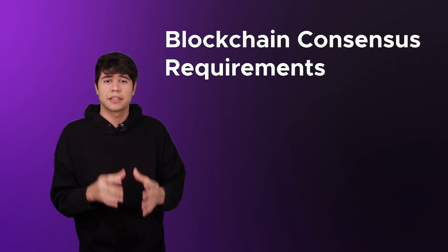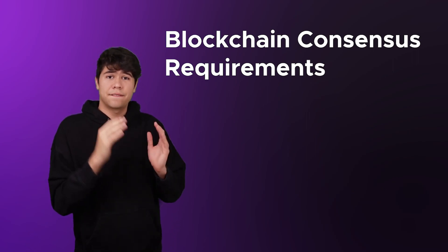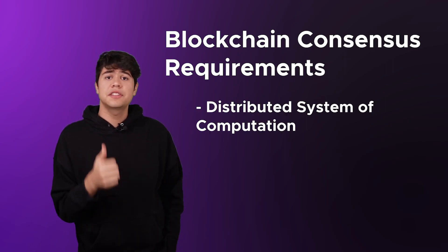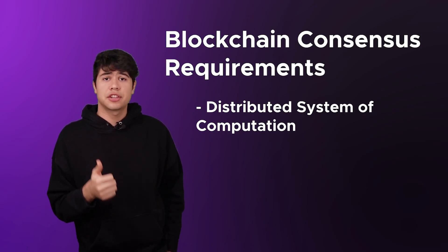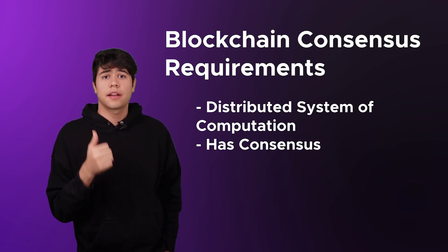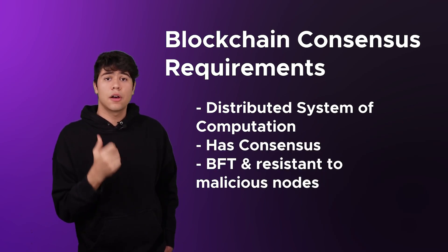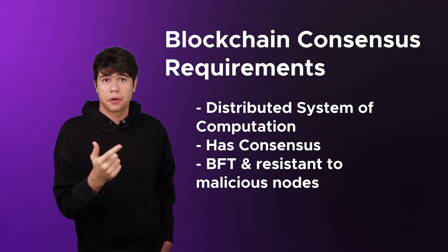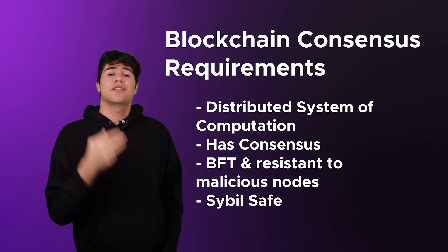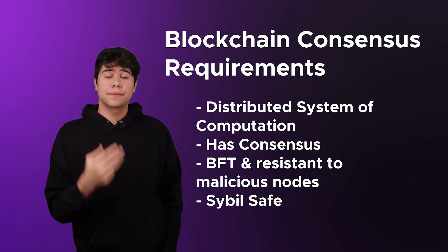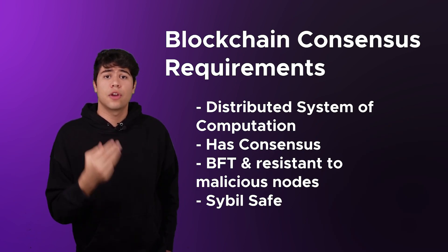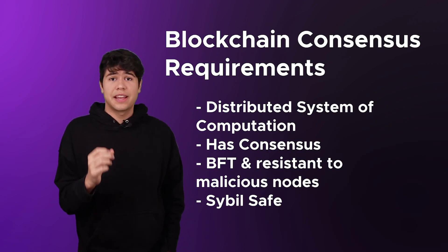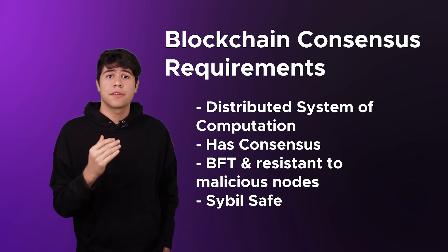How does this apply to blockchains? Consensus protocols that fit into blockchain technology need to meet all these criteria: it needs to be a distributed system of computation that agrees on a shared state; the system also needs to be Byzantine fault tolerant and resistant to malicious nodes; and on top of that, it needs to be Sybil-safe and immune from fake nodes and their votes. Consensus protocols only work for blockchains if they have those properties.